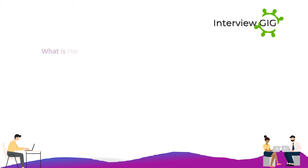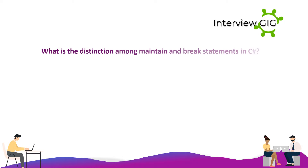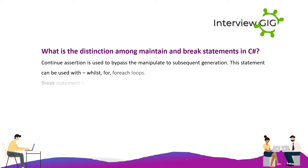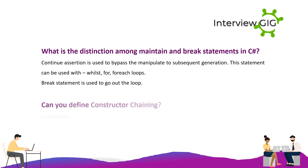What is the distinction between continue and break statements in C#? The continue statement is used to pass control to the next iteration of the loop. It can be used with while, for, and foreach loops. The break statement is used to exit the loop entirely.